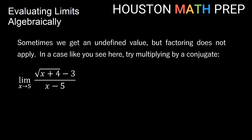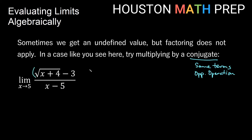Sometimes factoring doesn't help — for instance when we have a square root. Consider the limit as x approaches 5 of (√(x + 4) - 3) / (x - 5). Plugging in 5: √9 - 3 = 0 on top, and 5 - 5 = 0 on the bottom — 0/0, no good. In this case we multiply by the conjugate. The conjugate has the same two terms with the opposite operation: √(x + 4) + 3. We multiply both top and bottom by this conjugate, which is the same as multiplying by 1.